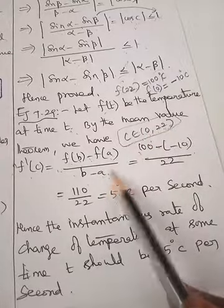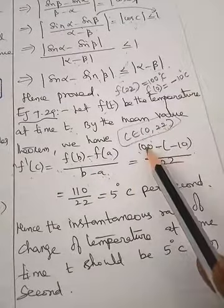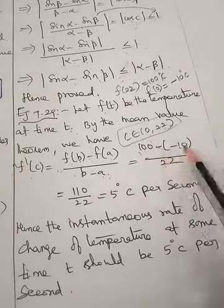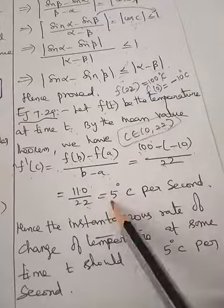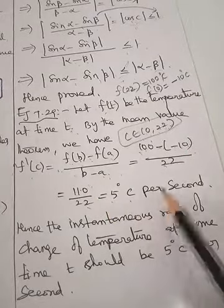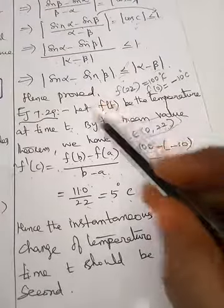f(0) is minus 10 degrees Celsius, f(22) is 100 degrees. So 100 minus (-10) equals 110 divided by 22, which equals 5 degrees Celsius per second.